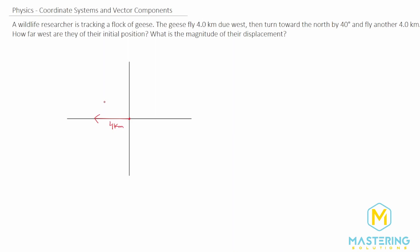Then they turn 40 degrees to the north and fly another 4 kilometers. This second leg is also 4 kilometers, and this angle right here is 40 degrees. They want us to find out how far west they are from the initial position, and what the magnitude of their displacement is.